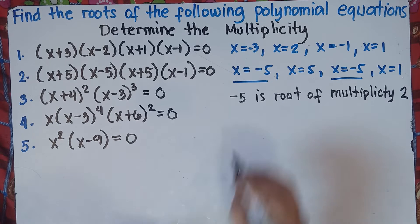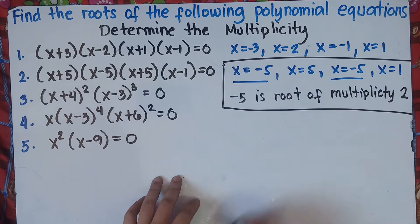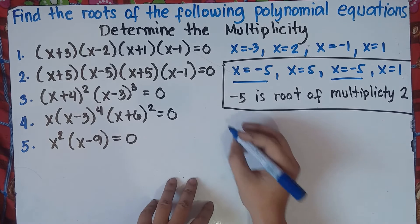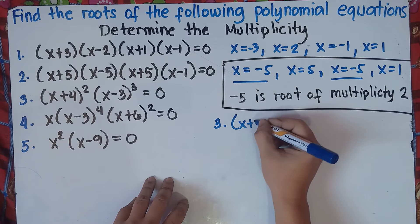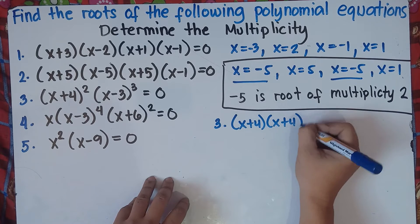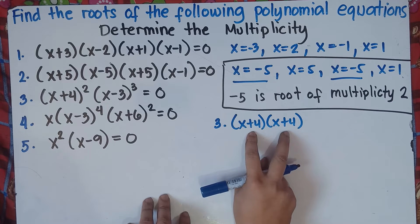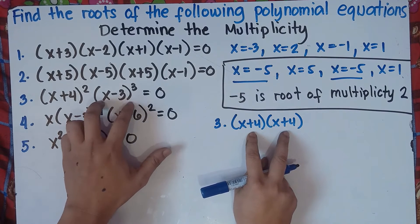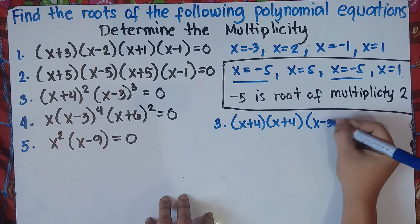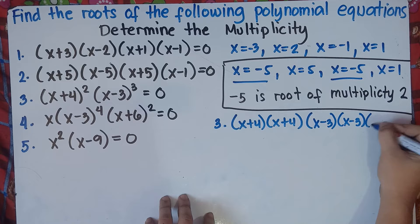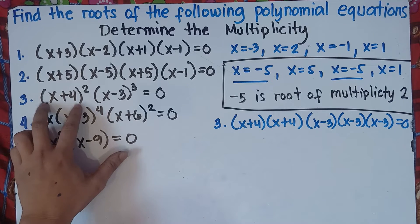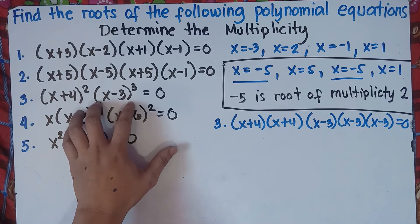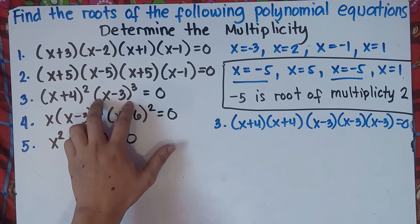That's the answer for number 2. Let's try number 3. For number 3, we have (x plus 4) squared — that means x plus 4 multiplied by x plus 4, so there are 2 factors of x plus 4. And (x minus 3) cubed means x minus 3 multiplied by itself 3 times.